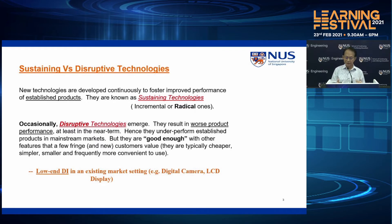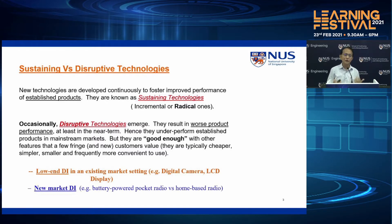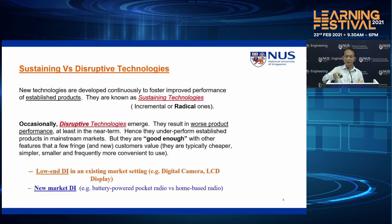Professor Christensen also helped us understand that disruptive innovation comes in two forms: either at the low end of an existing market — for example, digital cameras or LCD displays versus conventional — which is called low-end disruptive innovation. We also have new market disruption, where home-based radios and tabletop devices get replaced by portable, battery-powered devices — like the first-generation pocket radios. Their performance is not as good as the home-based radio, but how did they become a new innovation?